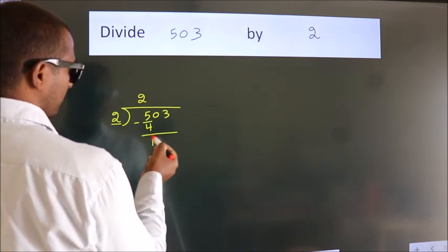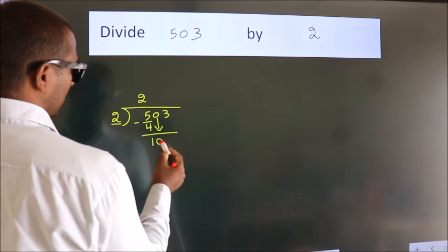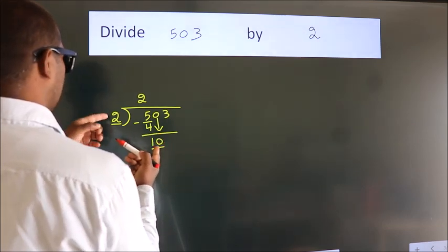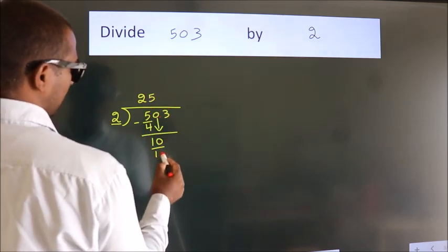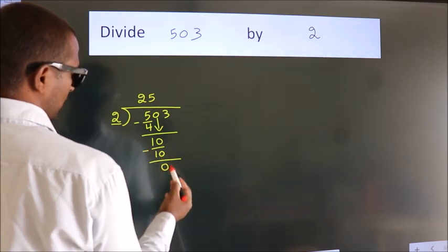After this, bring down the beside number. So 0 down. So 10. When do we get 10? In 2 table, 2 5s, 10. Now we subtract. We get 0.